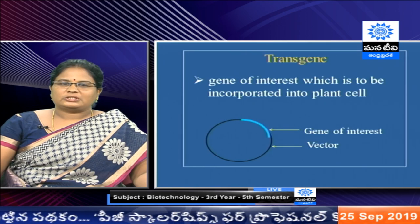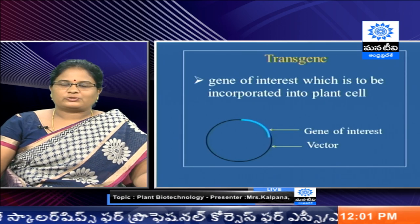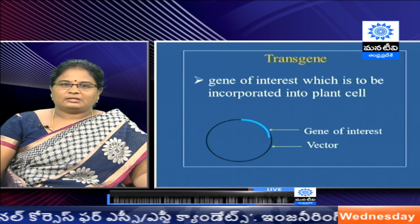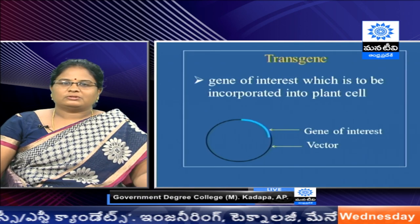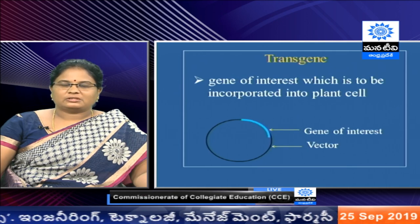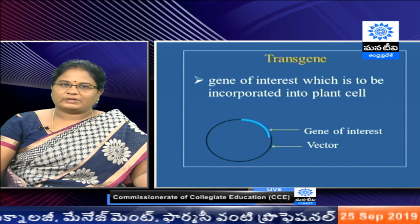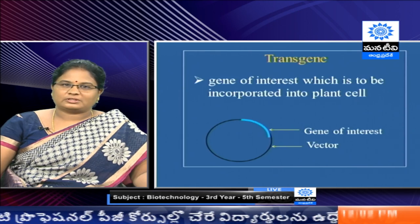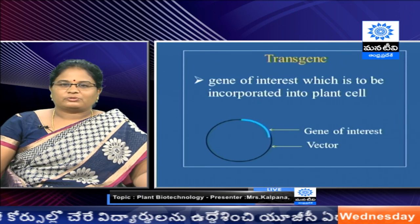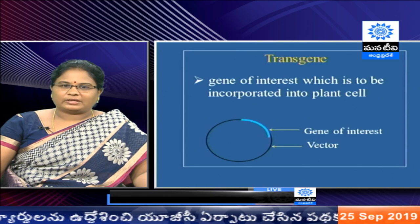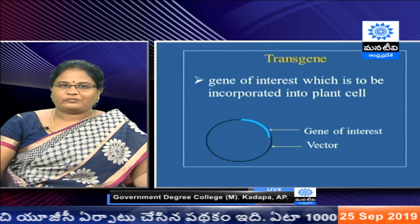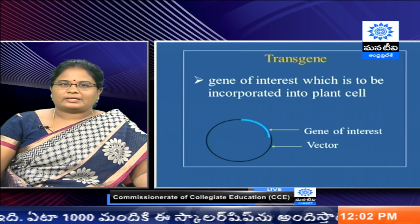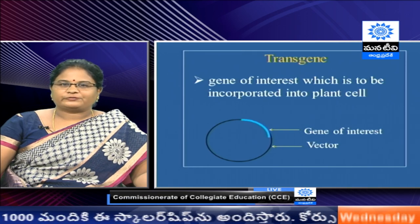The gene of interest which is to be incorporated into the plant cell is the transgene. The gene of interest is first cloned into a vector. A vector is a carrier molecule which carries the gene of interest into the plant cell. Once the vector is modified, we can produce transgenic plants using different methods.